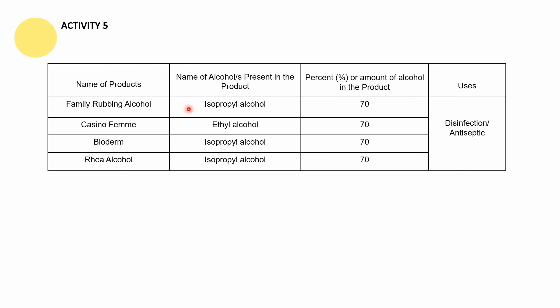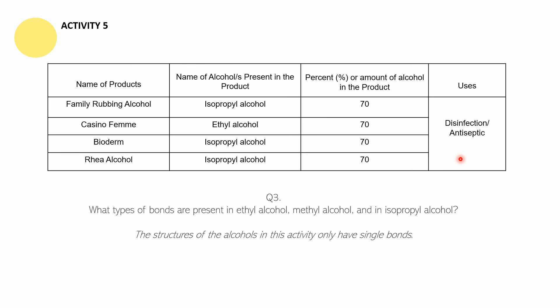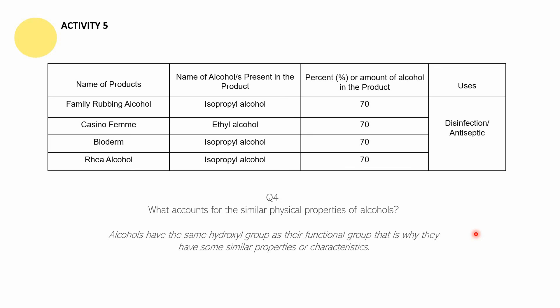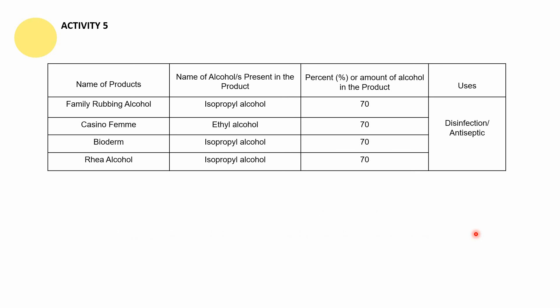For the answers: Family rubbing alcohol, Casino Femme, Biogenic, and Rhea alcohol all have a common use — disinfection — and they are also antiseptic. The answers to questions one and two can be found by looking at the table. For question three, the answer is that the structure of alcohols in this activity only have single bonds. For question four, alcohols have the same hydroxyl group — the OH group — as their functional group, and that is why they have similar properties or characteristics.